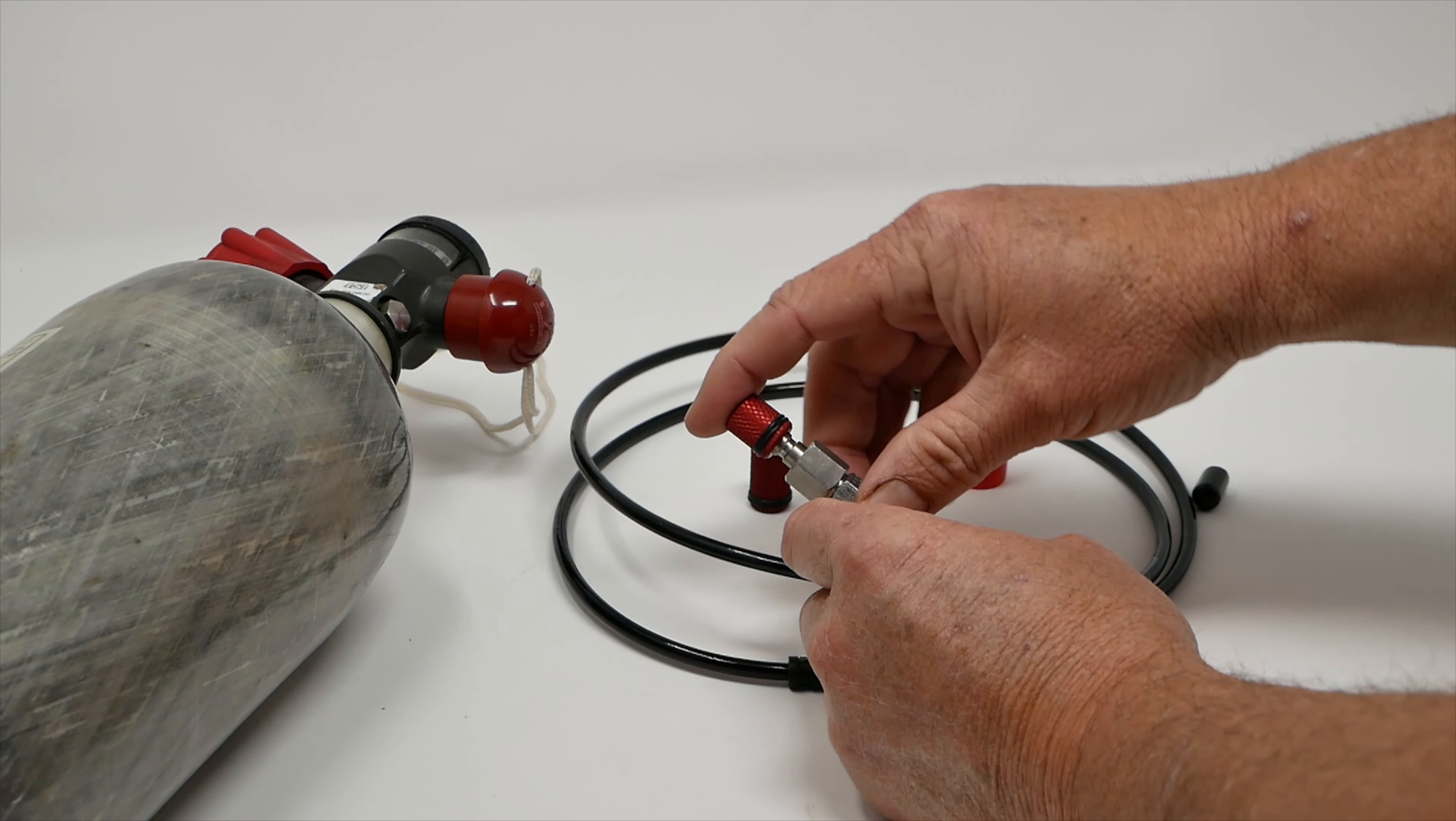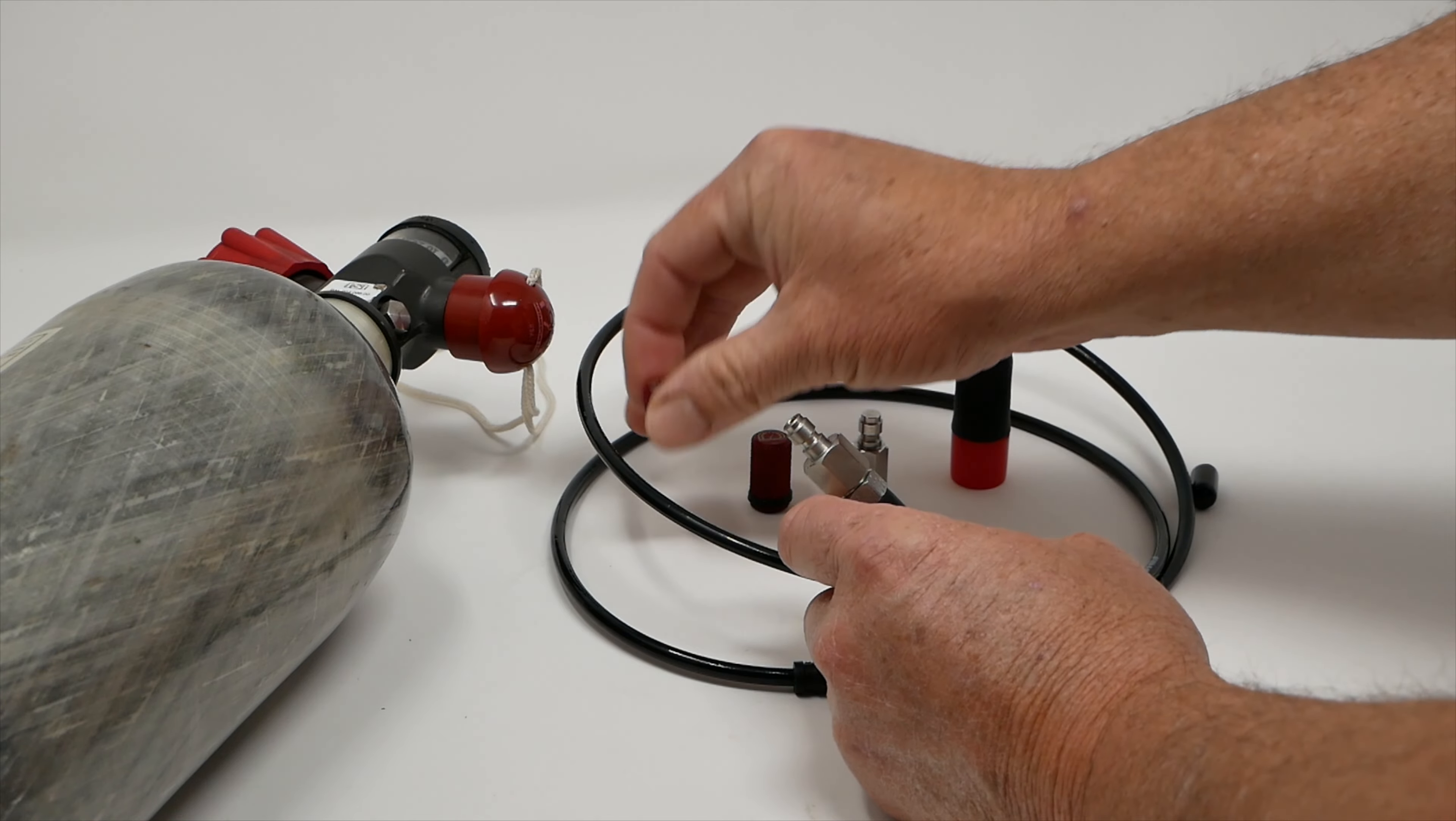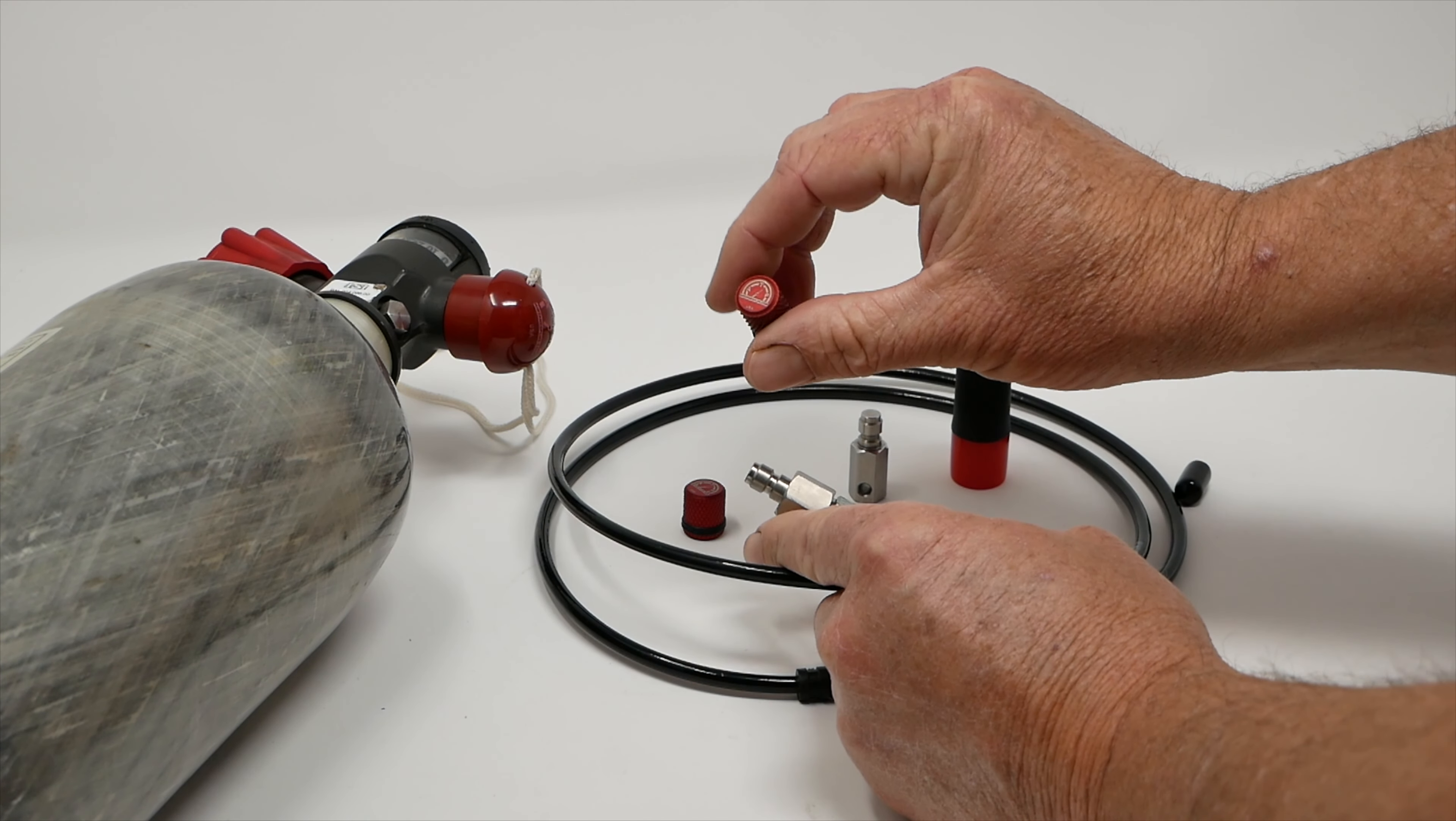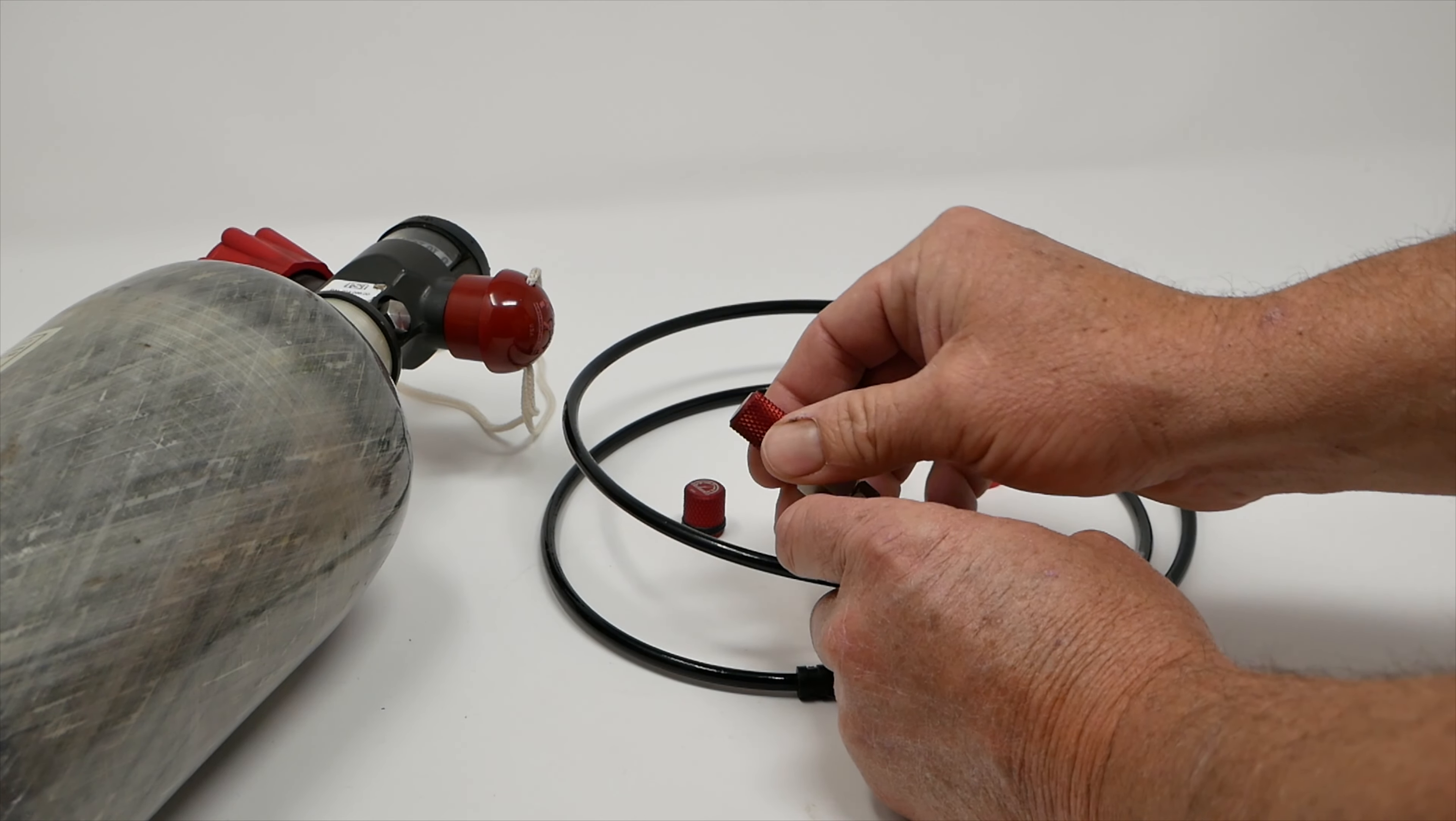Then our Catman just slips on, snaps on, snaps off, is logoed. Then we have the long version, the Catman XL, that goes on, pops off.